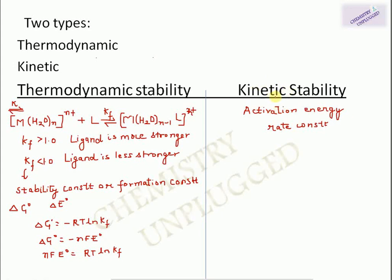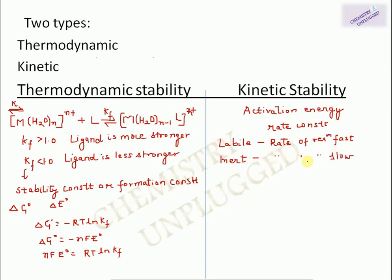The key difference: thermodynamic stability defines the tendency toward equilibrium, while kinetic stability defines the rate of formation. Based on kinetic stability, complexes are divided into two types: labile complexes, for which the rate of reaction is fast, and inert complexes, for which the rate of reaction is slow. We will discuss later how to determine labile vs. inert complexes using VBT and CFT.